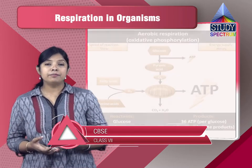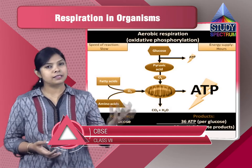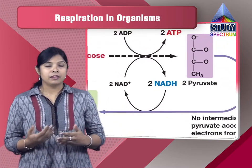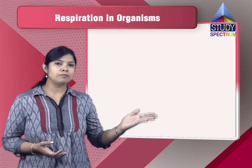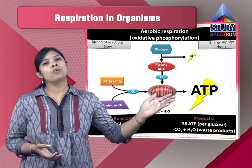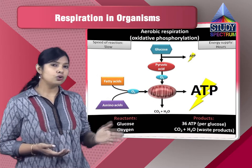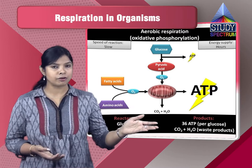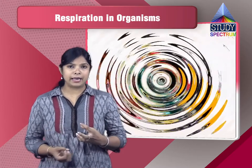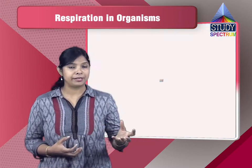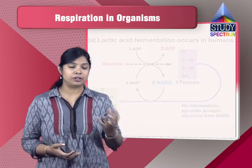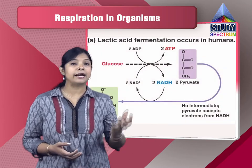In anaerobic respiration, glucose breaks down in the absence of oxygen. This process is called anaerobic respiration. In the reaction of aerobic respiration, glucose breaks down in the presence of oxygen and releases energy, carbon dioxide, and water. During aerobic respiration, energy is released in high quantity — near about 38 ATP, that is adenosine triphosphate — but in anaerobic respiration it is comparatively very less.